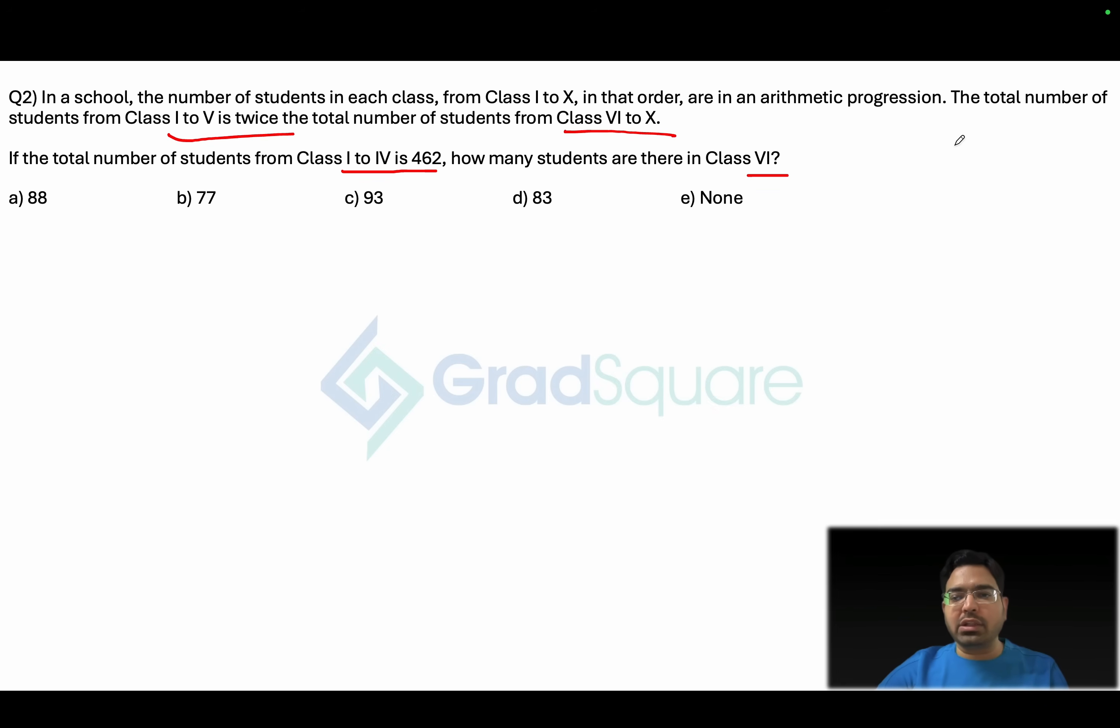Now if you look at all the number of students in each of these classes, that can be assumed as a, a plus d, a plus 2d, because these are in arithmetic progression and it goes all the way up to a plus 9d as for class 10.